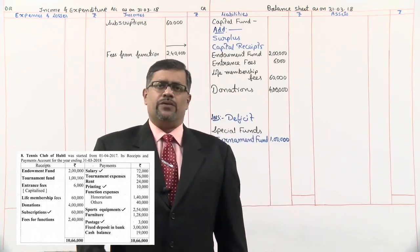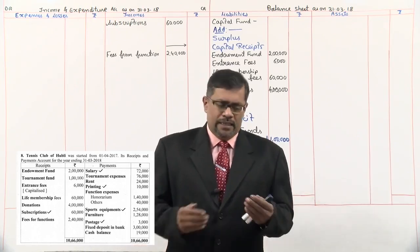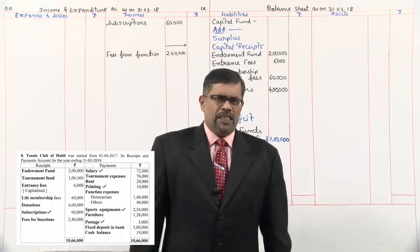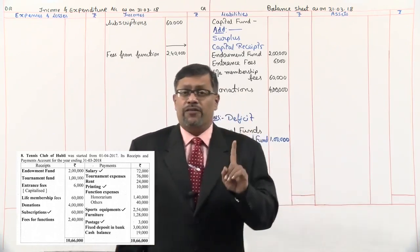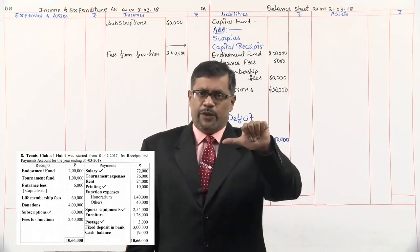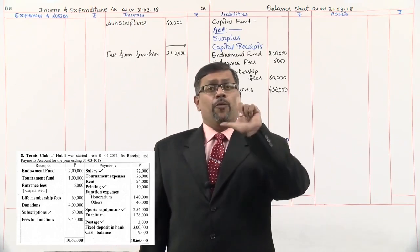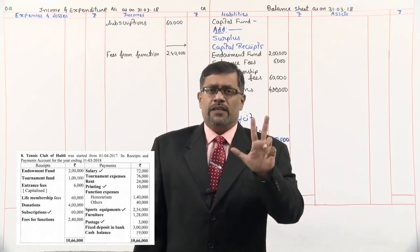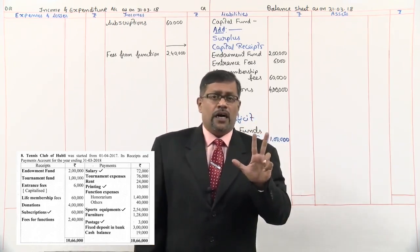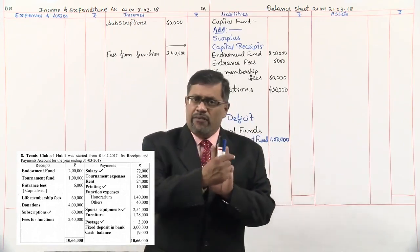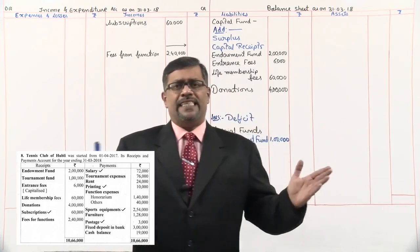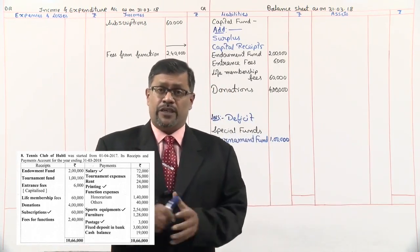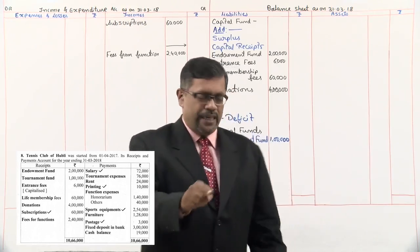Let us start with the payment side. The first item is salary — monthly remuneration paid to workers, which is a revenue expenditure. Remember, an expenditure is capital if: a new asset comes into existence, there is improvement to an existing asset increasing its value, or there is discharge of a fixed liability — a non-recurring payment. If any one of these three conditions is fulfilled it is capital; otherwise it is revenue. Salary is paid monthly — that is a revenue expenditure. Amount is 72,000 with a tick mark, meaning there is an adjustment. We'll take it in the inner column.